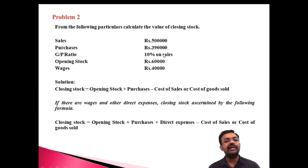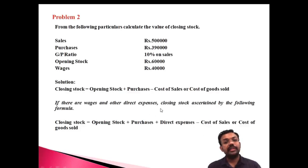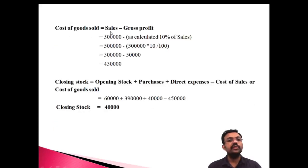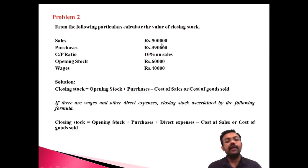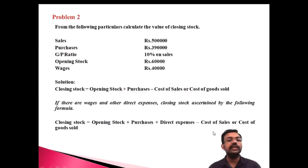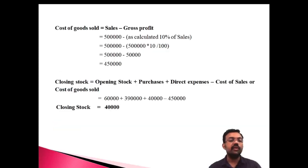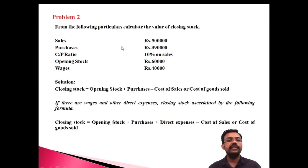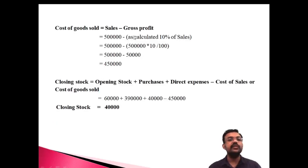Since the gross profit is already given as a percentage of sales, no conversion is needed. Cost of Goods Sold = Sales − Gross Profit = 5,00,000 − 10% of 5,00,000 = 5,00,000 − 50,000 = 4,50,000.